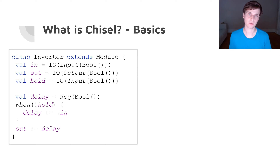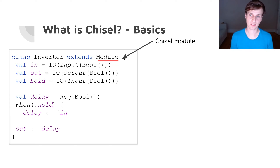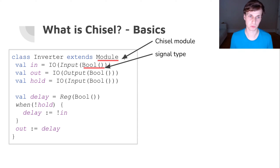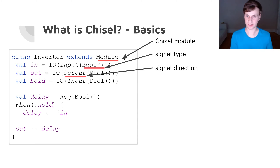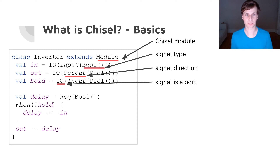So this is a very basic Chisel circuit — it's just an inverter and it shows us the basics. Every module in Chisel is a Scala class that extends a Chisel base class. We can define the type of a signal — for example a Boolean signal — and we can define a direction, so in this case an output, and then also specify that a signal is a port, which means it will be available on the outside of the module.